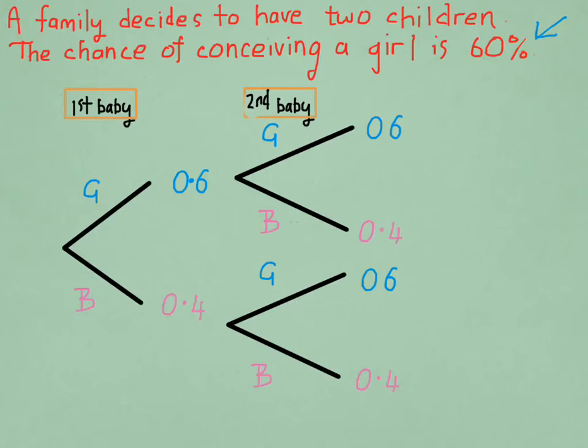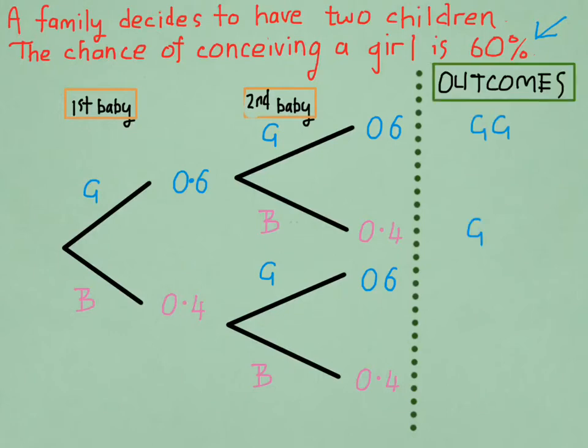So in terms of the total outcomes of this tree, we have GG, which is the two girls. So it's possible that the family could have two girls. Or, it's also possible that the family could have one girl and one boy. So the girl first, and then the boy second. But we could also have that combination the other way around. So the boy child could come first, and then the girl child could come second. Or, there may not be any girls in the family at all. And in that case, we're going to have two boys.